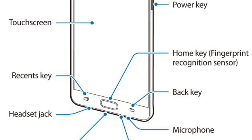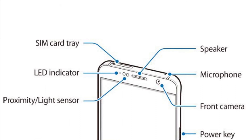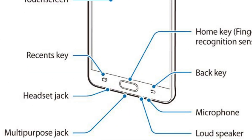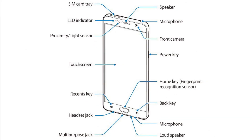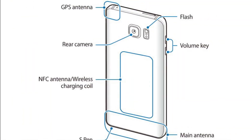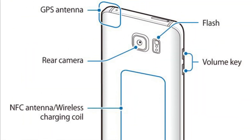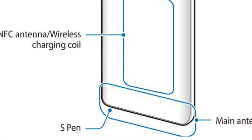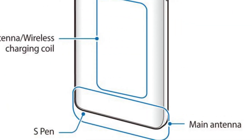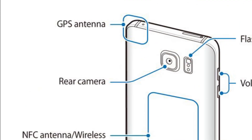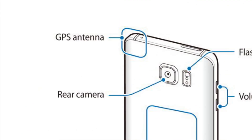If you look at it from the top we have a SIM card tray and a microphone, and below we have a headset jack, a multipurpose jack or USB, a loudspeaker, and another microphone. If you turn the phone around we'll see a rear camera, flash, and the volume keys. Below we have an S Pen. The main antenna, the NFC antenna, and the GPS antenna are all embedded inside.